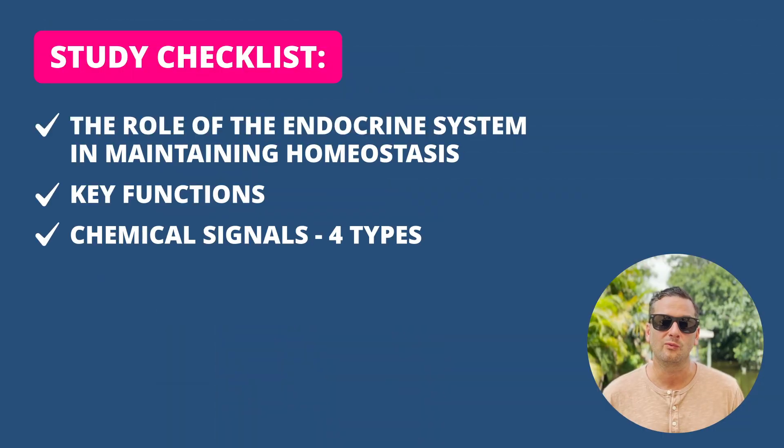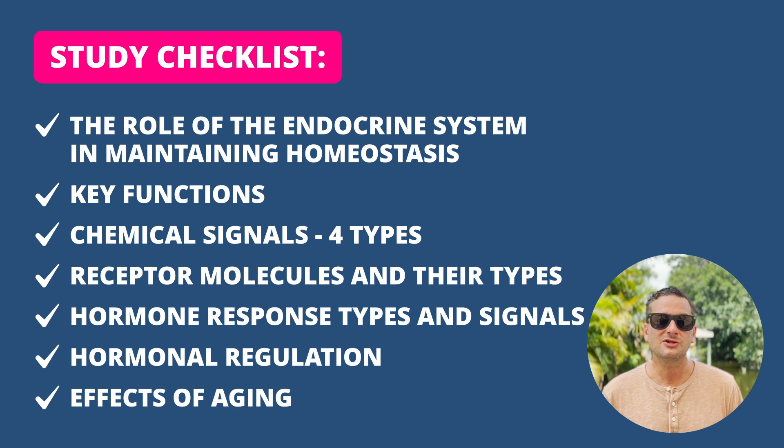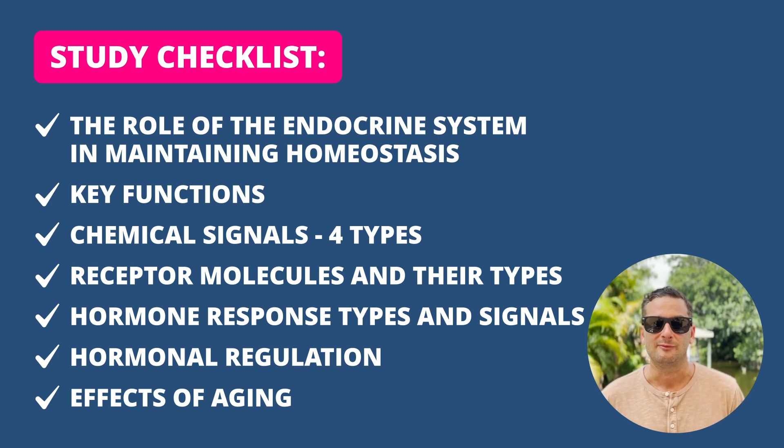You will definitely see questions about hormones and the endocrine system on your test. You need to know hormones well — where they are, what they release, and how they release them. The endocrine system deals with water balance, ion regulation, growth, metabolism, blood glucose control, and releases chemical signals. There are several different types to know, and it's common to see questions about receptor molecules and how they interact with body systems to produce responses.